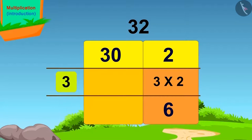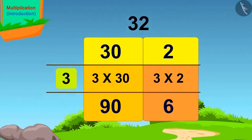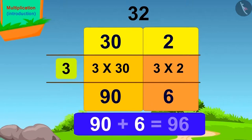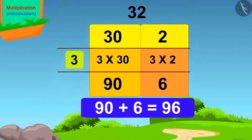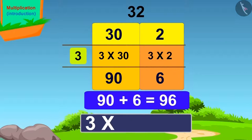Now we will multiply 30 by 3. 3 times 30 is 90. We write this answer here. Now it's very easy. On adding 6 and 90, we get 96. This way we got our answer. 3 times 32 is 96.